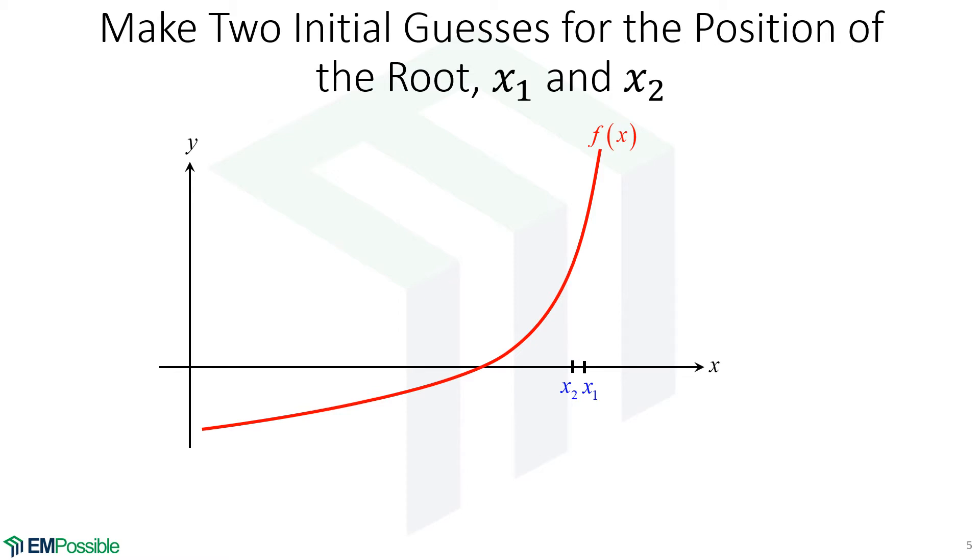So we have to make two guesses as close to the root as we can find. It doesn't matter if they're both on one side or they cross it. We just need two points as close to the root as we can get, and they can't be the same point. They can't be equal.